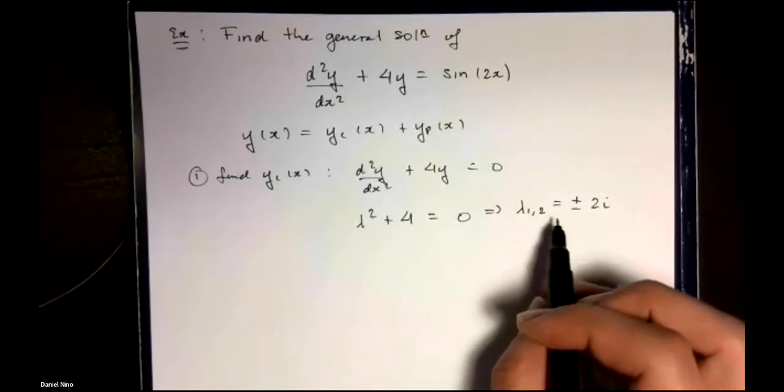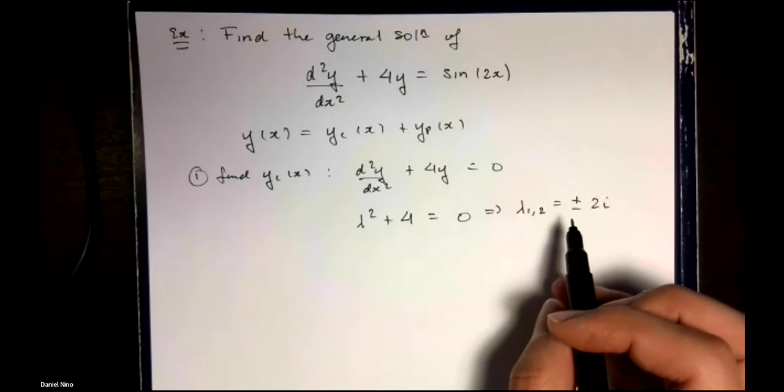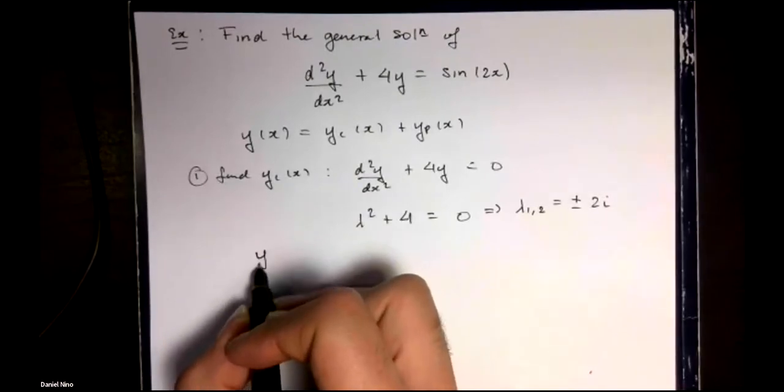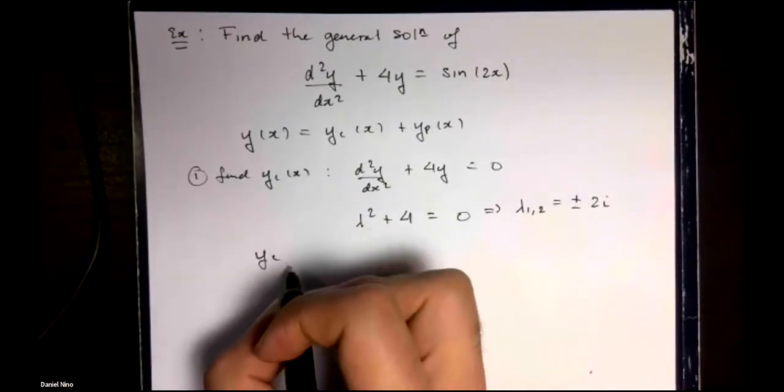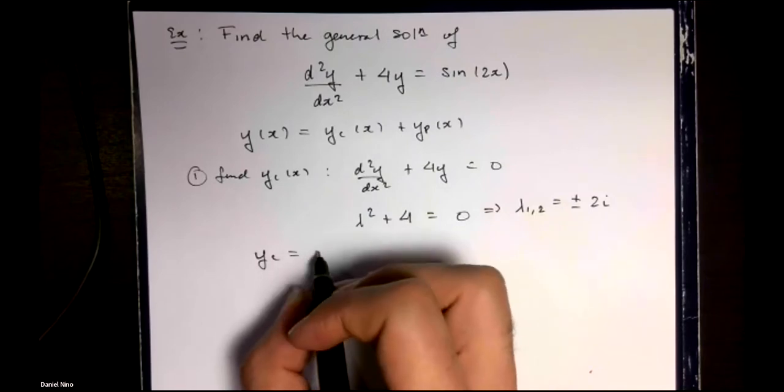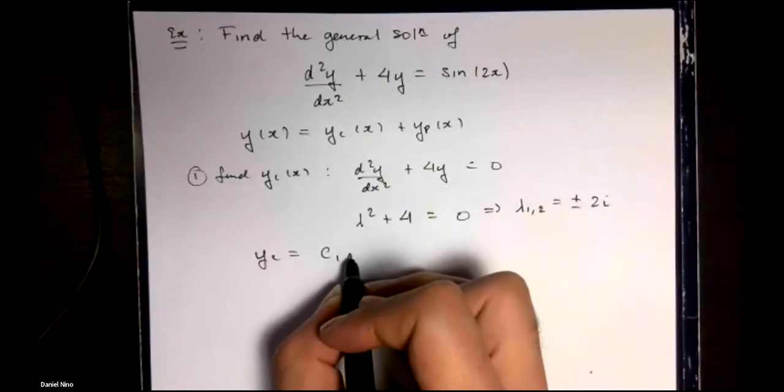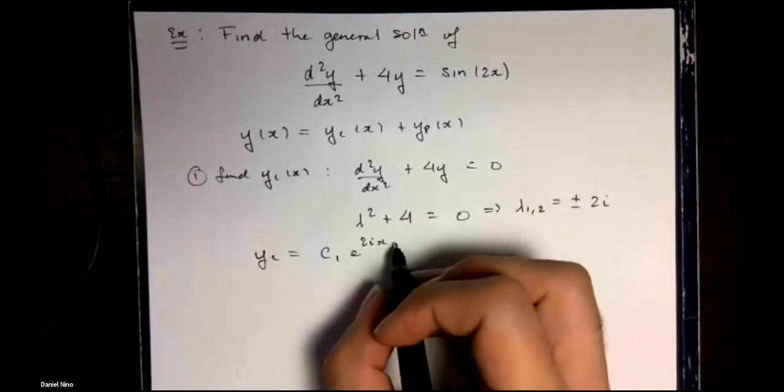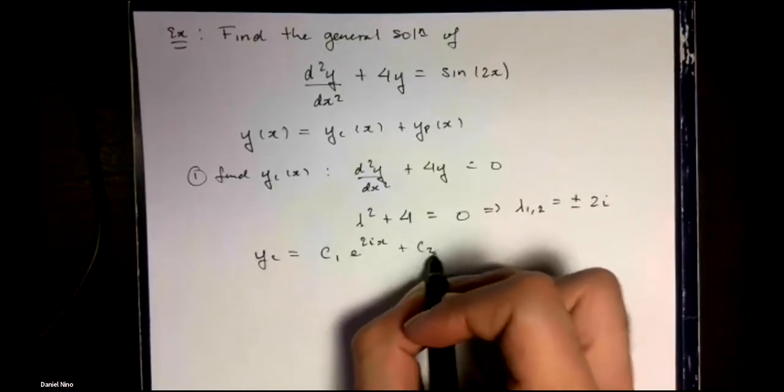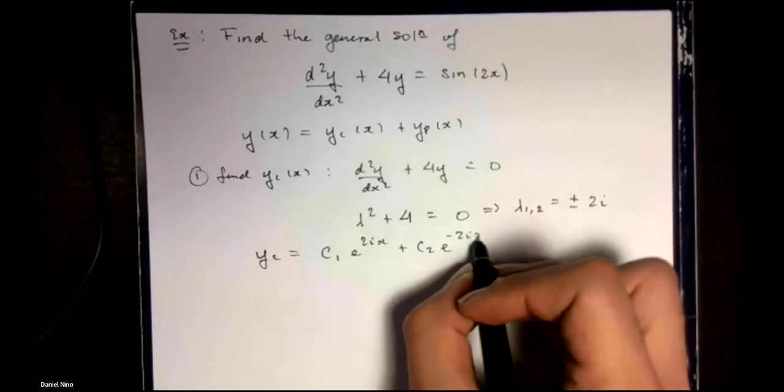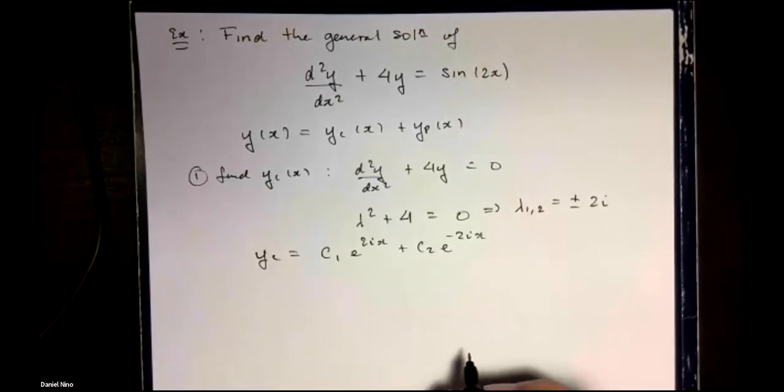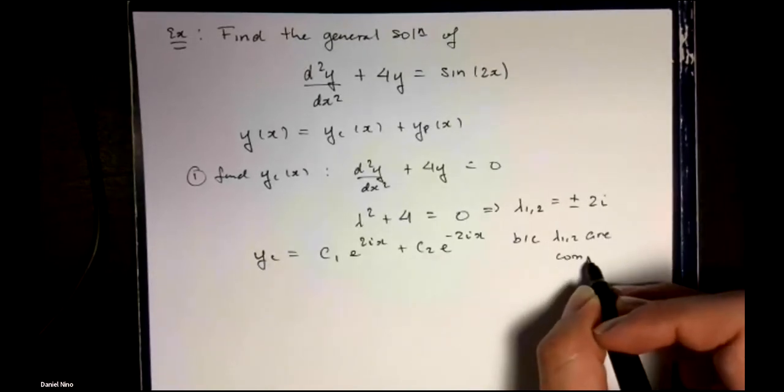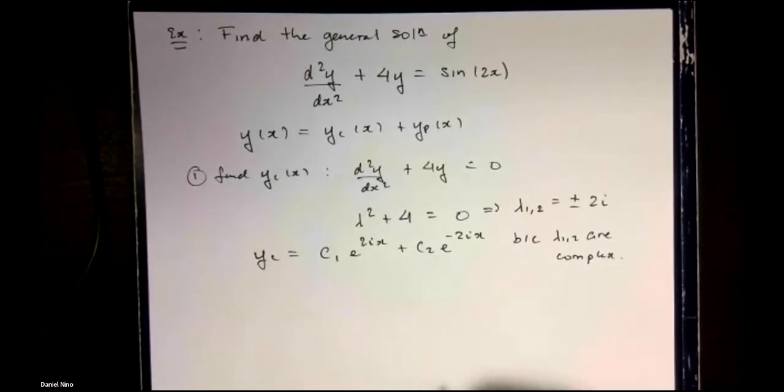So we have what we call case 2, where the roots are complex, which means that our complementary solution has the general form C1 e to the 2ix plus C2 e to the minus 2ix. This is because the roots to our auxiliary equation were complex.